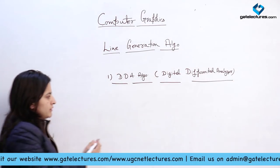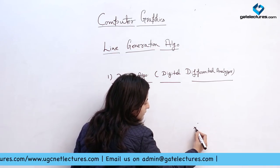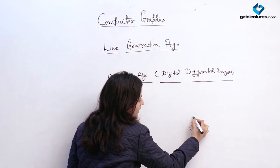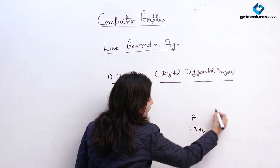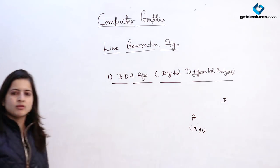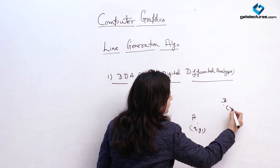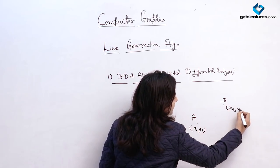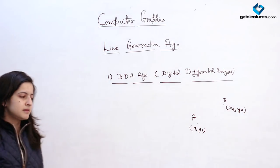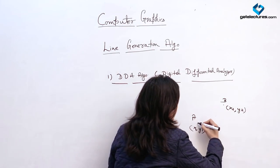In this algorithm, we start with the first point. Suppose we have a line with two endpoints A and B. We have the coordinates of these points as x1, y1 and x2, y2. We have to generate a line between these two endpoints.